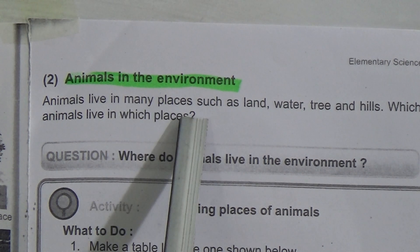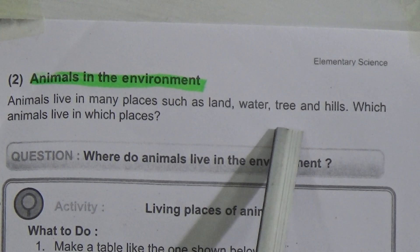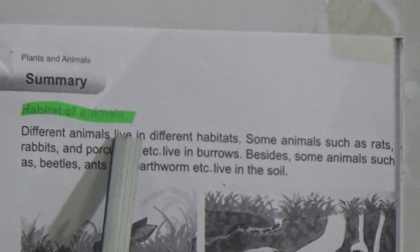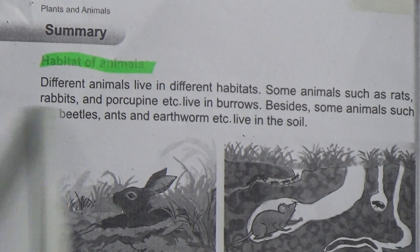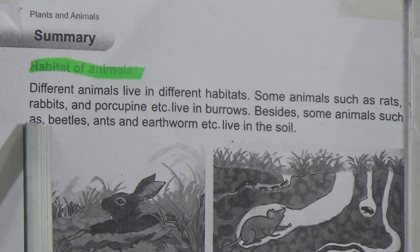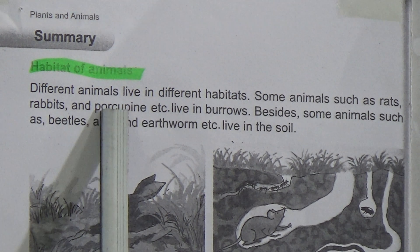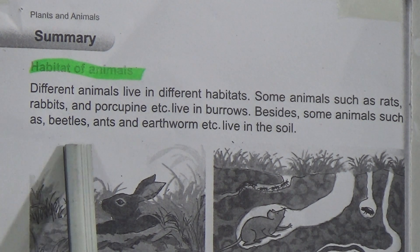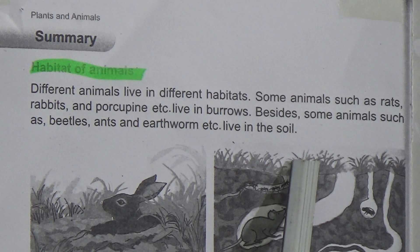Animals in the environment: animals live in many places such as land, water, trees, and hills. Habitat of animals: different animals live in different habitats. Some animals such as rats, rabbits, and porcupines live in burrows. Some animals such as beetles, ants, and earthworms live in the soil.